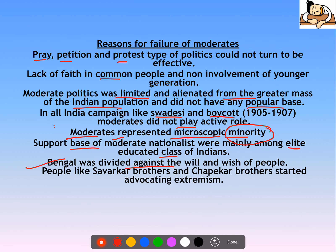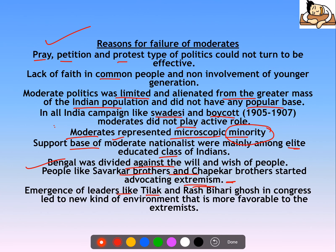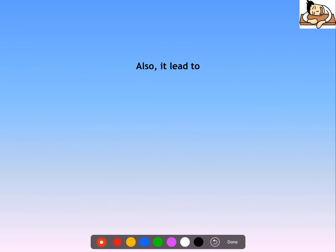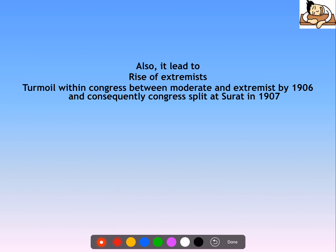Bengal was divided against the will and wish of the people. Leaders like Savarkar brothers and Chapekar brothers started advocating extremism, because their petitions and protests had achieved nothing. This is why extremism rose. The emergence of leaders like Tilak and Rajbihari Ghosh in Congress led to a new environment more favorable for the extremists.